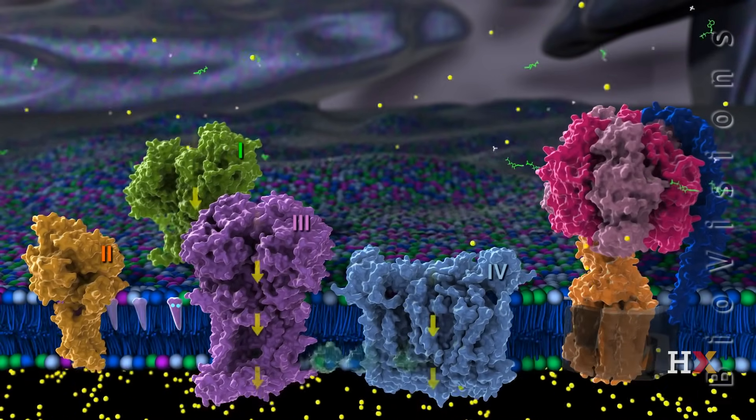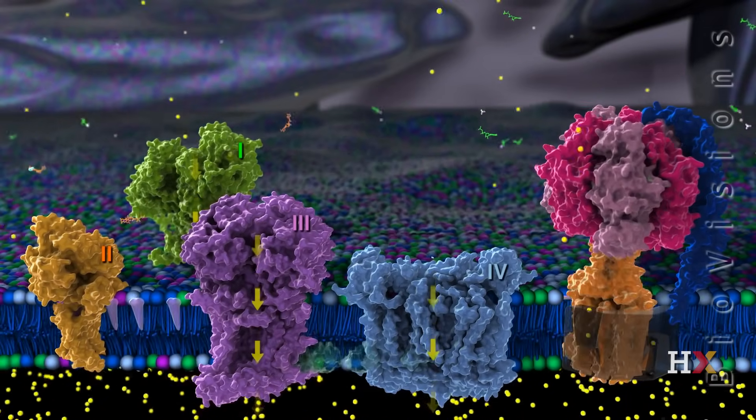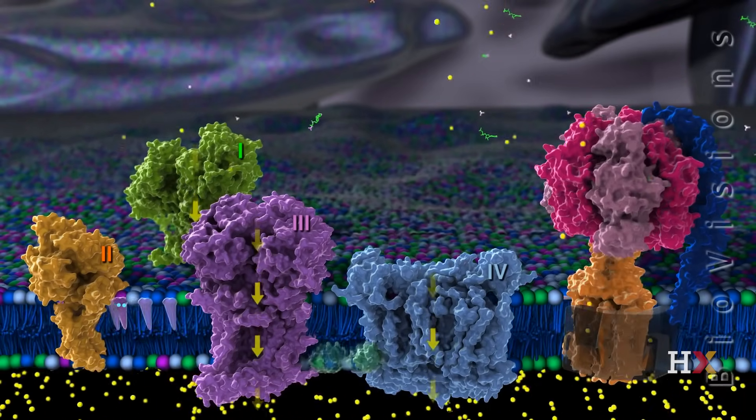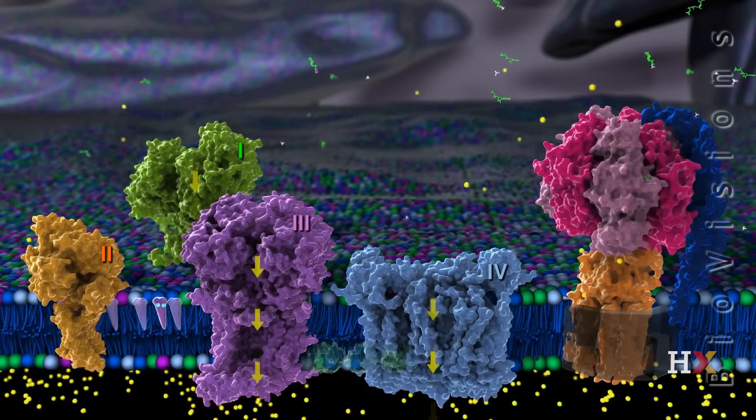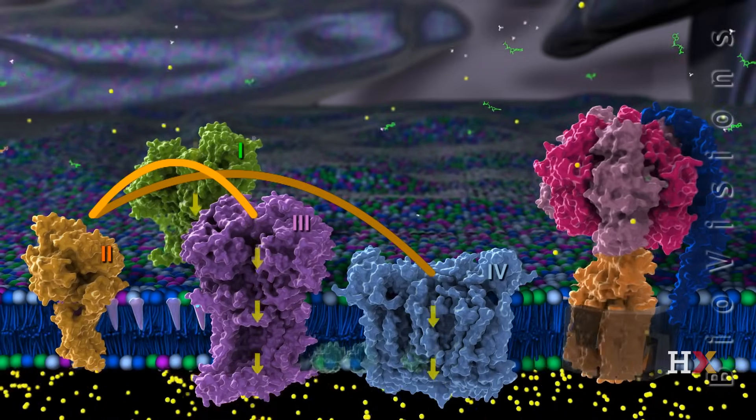Complexes one, three, and four directly pump protons from the matrix into the inter-membrane space. Complex two does not directly pump protons, but it does promote proton pumping in complexes three and four.